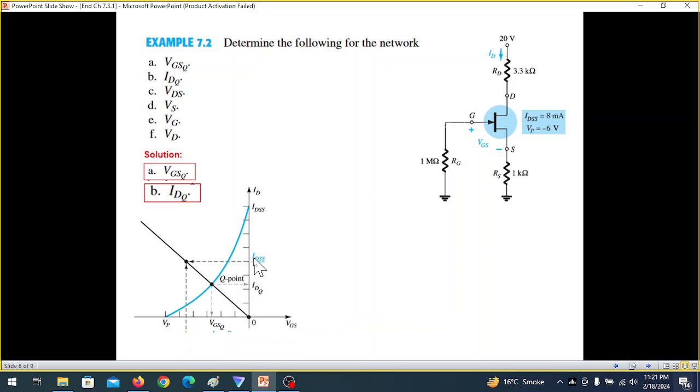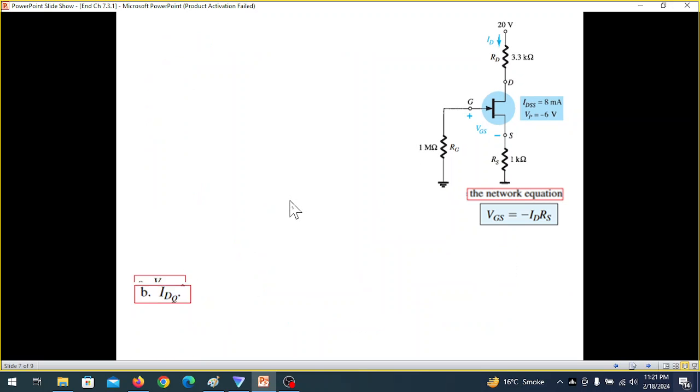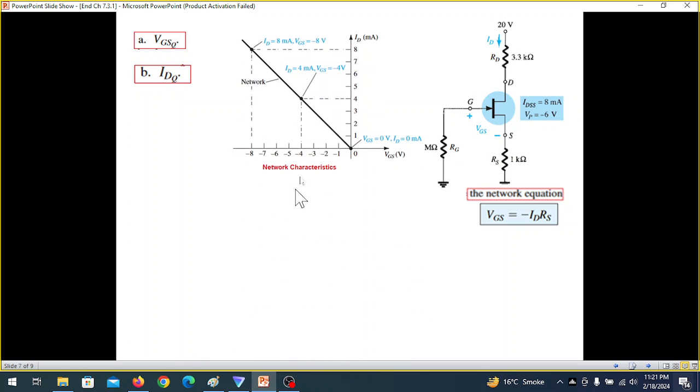Now as we mentioned that we have to get or go into this graph, which is a combination of the device and the network. This is the device characteristics. This is the network characteristics. Superimposing, we need to achieve this to get to the Q point. Now the Q point is this point where it is. And both the graphs intersects. So first of all, how do we plot the network graph?